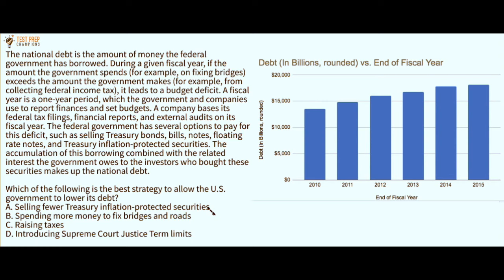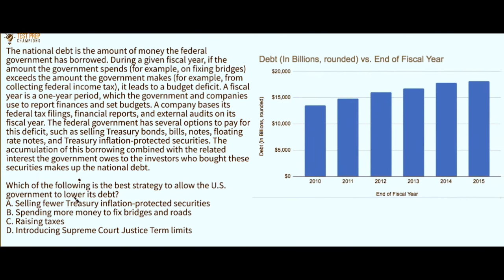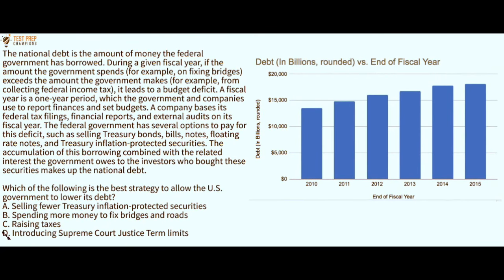Hopefully you had a chance to try this. Here's a tip: if we look at answer choice D, it mentions introducing Supreme Court justice term limits. The Supreme Court was not mentioned anywhere in the passage, and term limits weren't mentioned either. If you ever see an answer choice that introduces a topic not mentioned in the passage, it's probably a safe bet to eliminate that answer choice. So we'll take D out.